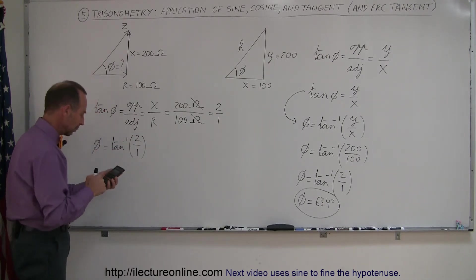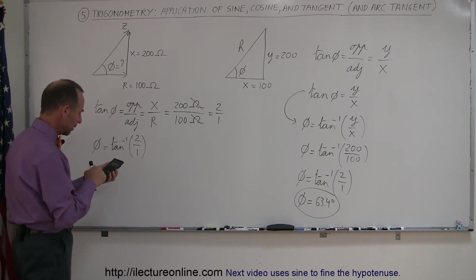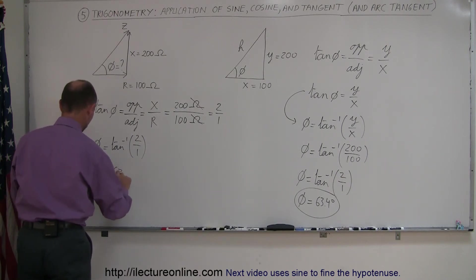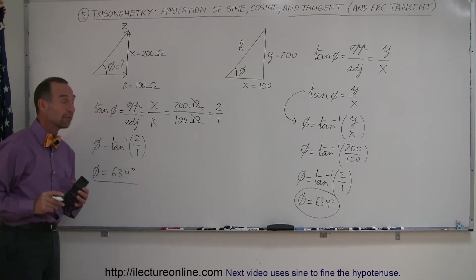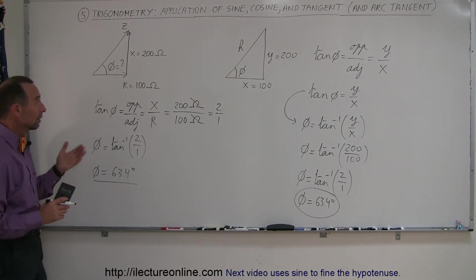We grab a calculator. We punch in 2 divided by 1. We take the inverse second function tangent, and we see that phi is equal to 63.4 degrees. And that is how we find the angle when the opposite and the adjacent sides are known.